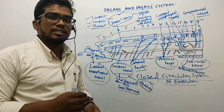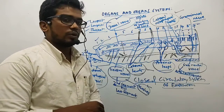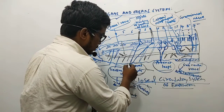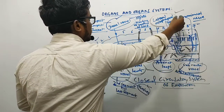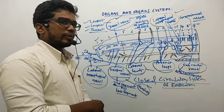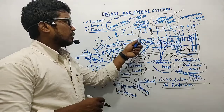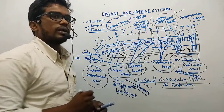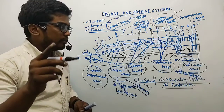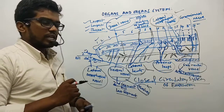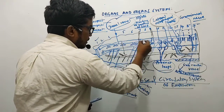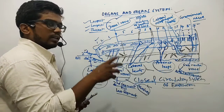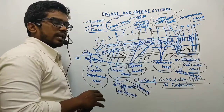Now let us discuss the hearts of the earthworm. There are a total of four tubular hearts: two pairs of lateral hearts and two pairs of lateral esophageal hearts. The lateral hearts are two pairs, present in the seventh and ninth segments.